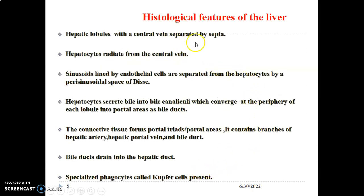The histological features of the liver: the liver is made up of hepatic lobules which are hexagonal in shape, and these hexagonal hepatic lobules are separated by septa. The liver has a Glisson's capsule which sends septa that divide the liver into lobules. These lobules are hexagonal and contain a central vein at the center.